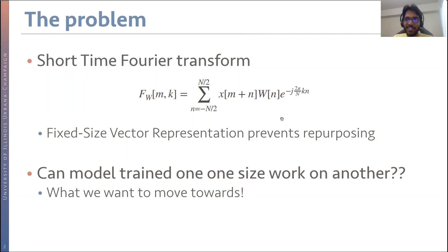The short time Fourier transform or the STFT is a very common first step for all of us who work with audio signals. It takes our input audio and maps it to a fixed size vector representation. But at the same time, this fixed size representation is what prevents neural networks from being repurposed for data that has been obtained with another set of parameters.